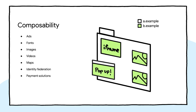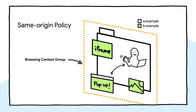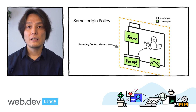Malicious parties could take advantage of the situation and exfiltrate information about your users. But browsers do a good job at preventing such scenarios. They keep cross-origin resources separated within a browsing context group when the webpage allows that. A browsing context group is a group of tabs, windows, and iframes that share the same context. The same-origin policy is a security feature that restricts how documents and scripts can interact with resources from another origin so that users' information won't accidentally leak.